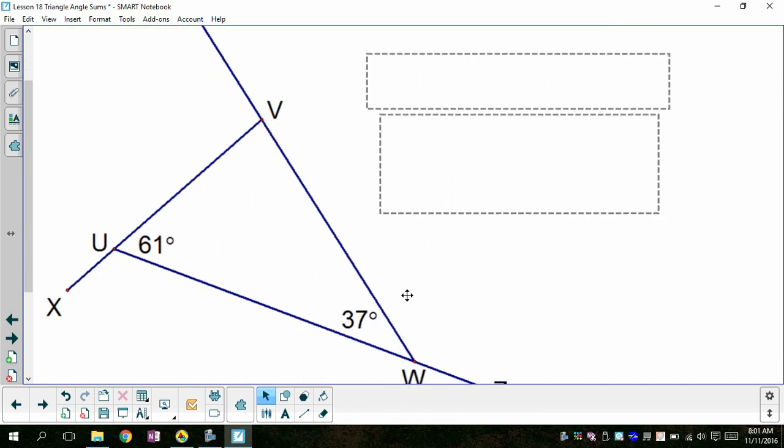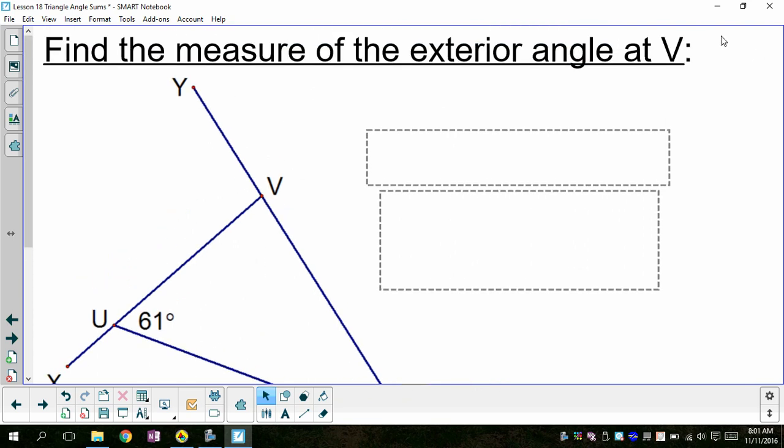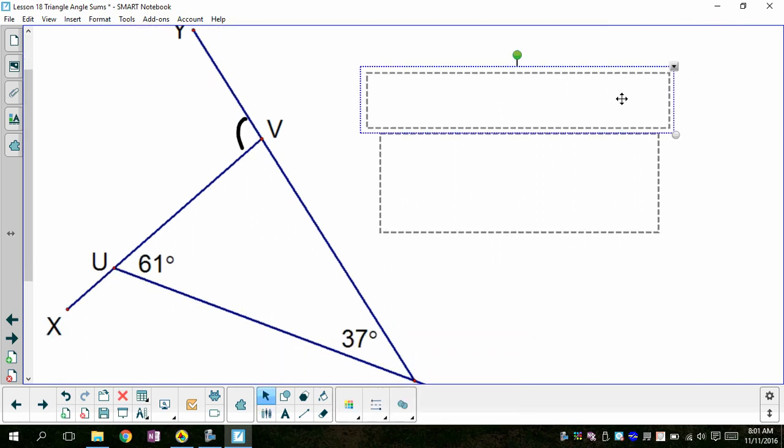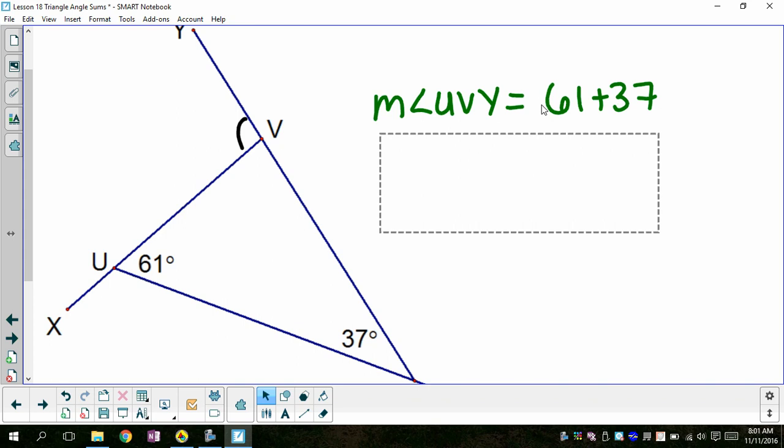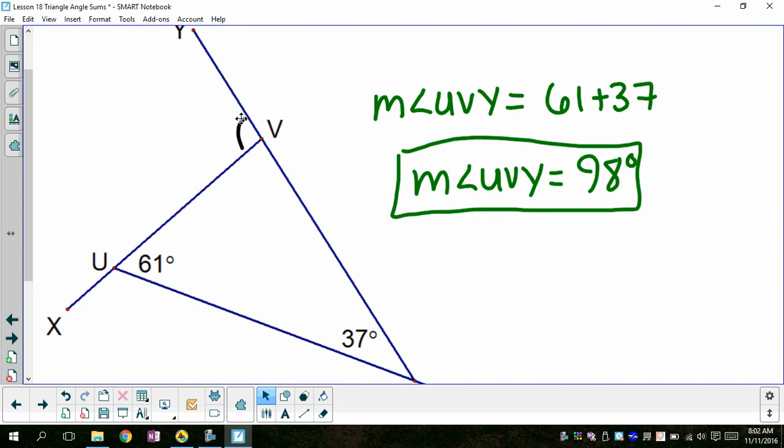So here I have a triangle and I've extended the sides to show you all three exterior angles. And I want to find the exterior angle at V. So I want to find this angle right here. And I can do that simply by adding the two remote interior angles, the ones that are not next to V. So I find that this exterior angle is 98 degrees.